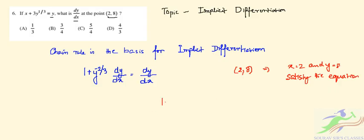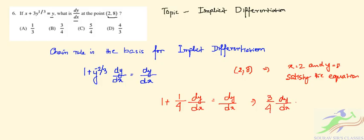Substituting the point, we get 1 + (1/4)(dy/dx) = dy/dx. Simplifying, (3/4)(dy/dx) = 1, so dy/dx at the point (2, 8) is 4/3. The correct option for question 6 is D, which is 4/3.